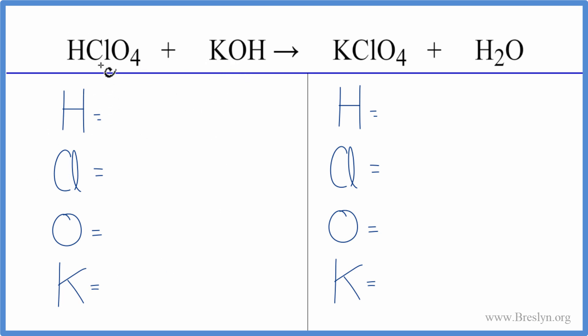Let's count the atoms up on each side. We have one hydrogen plus we have the one hydrogen here in the KOH. So that gives us two hydrogen atoms, one chlorine, four oxygens, plus, make sure you count the oxygen here in the KOH.